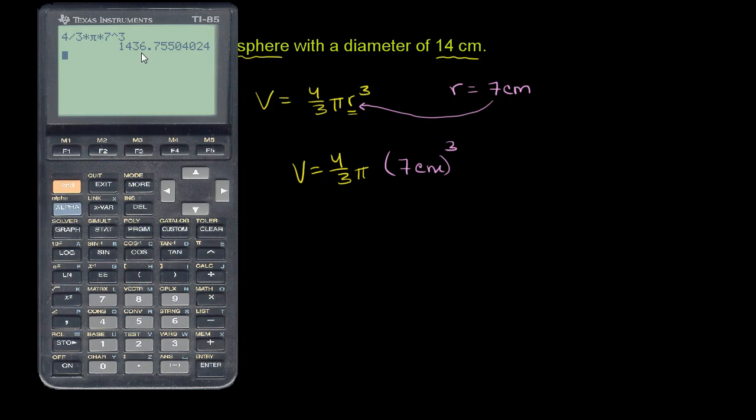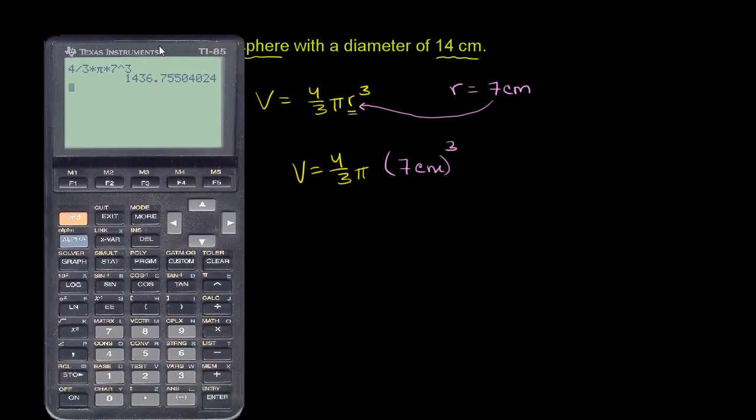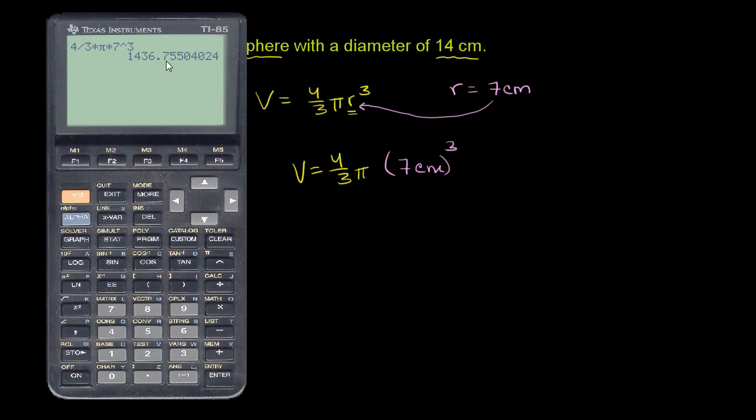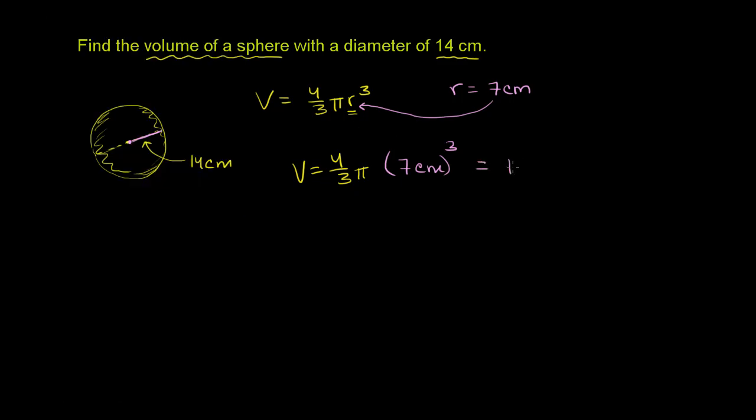So we get 1436. They don't tell us what to round it to, so I'll just round it to the nearest tenth. 1436.8. So this is equal to 1,436.8 centimeters cubed. And we're done.